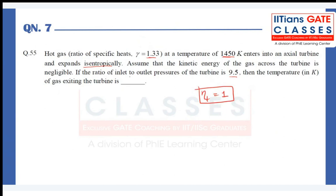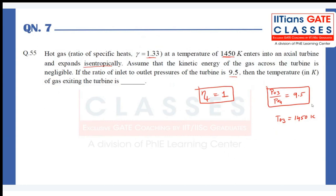They have given the ratio of inlet to outlet pressure: P03 divided by P04 = 9.5. Note that they give inlet to outlet, whereas we usually calculate P04/P03. The inlet stagnation temperature T03 = 1450 K. They are asking us to calculate T04.